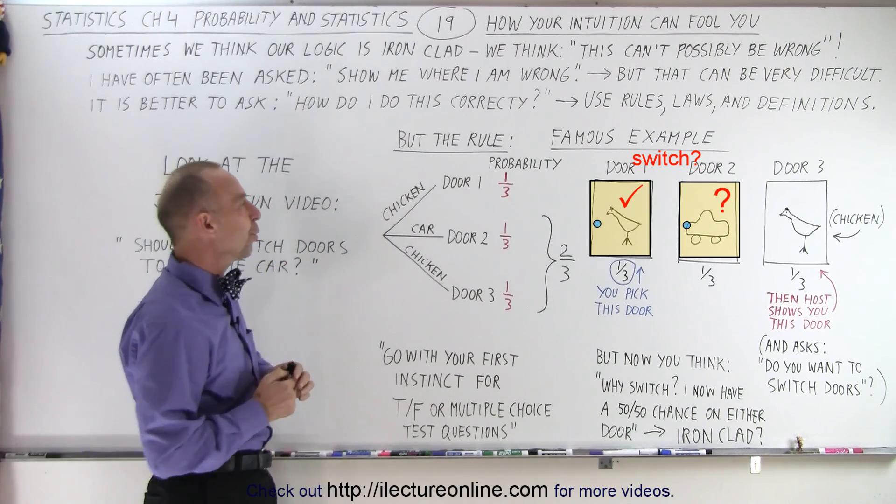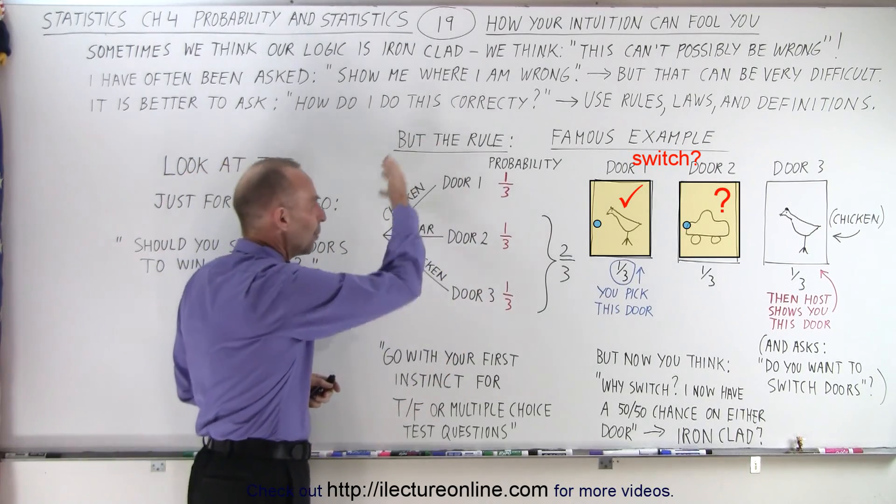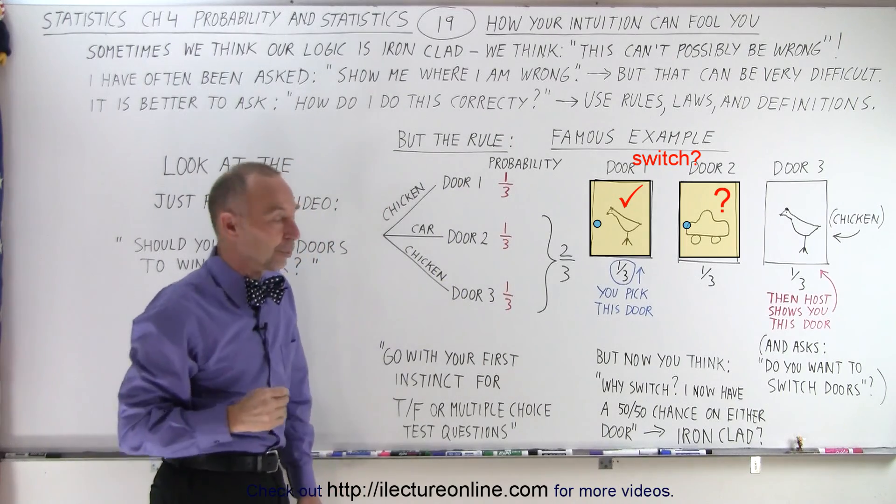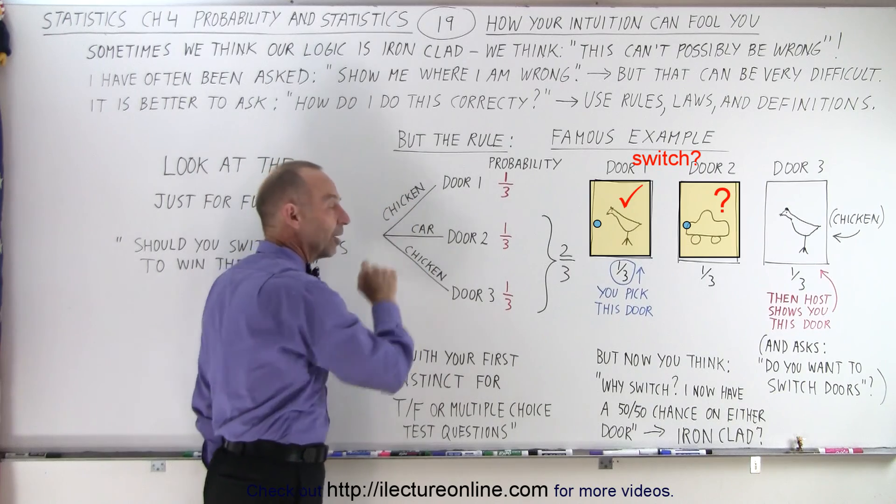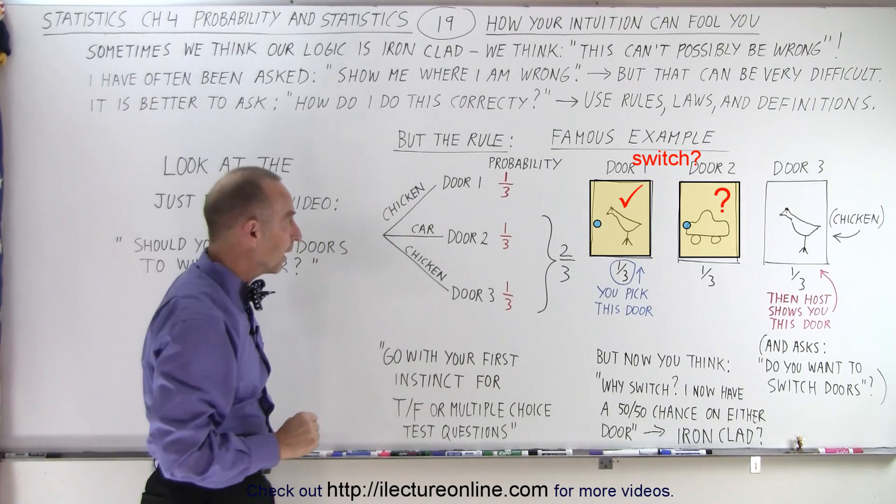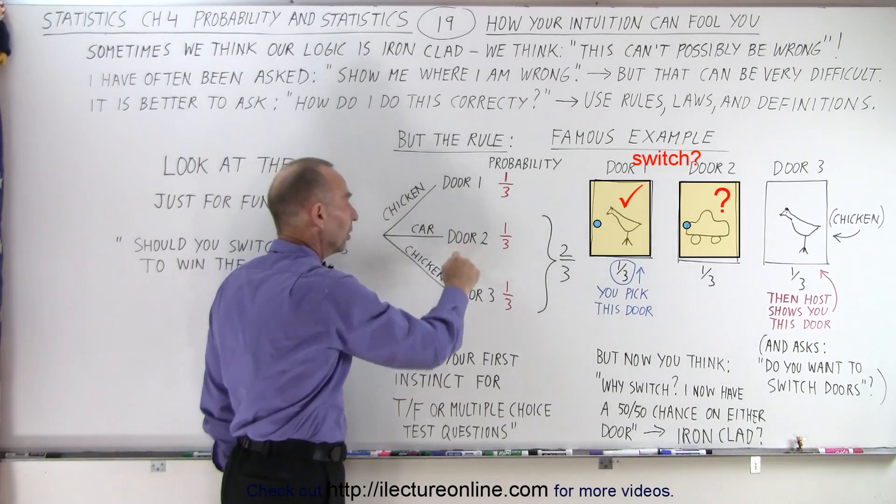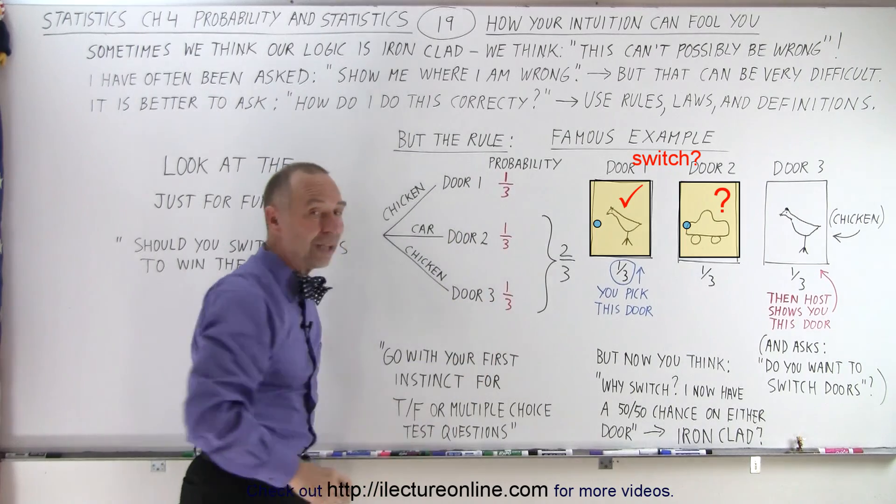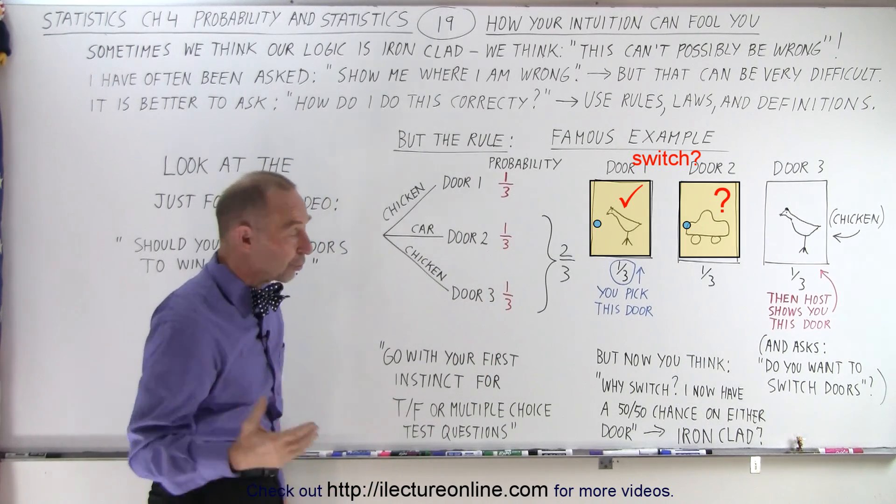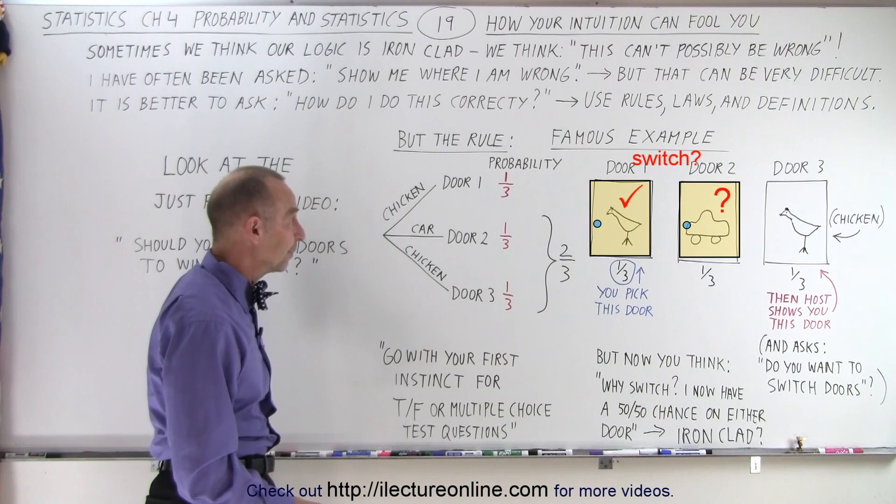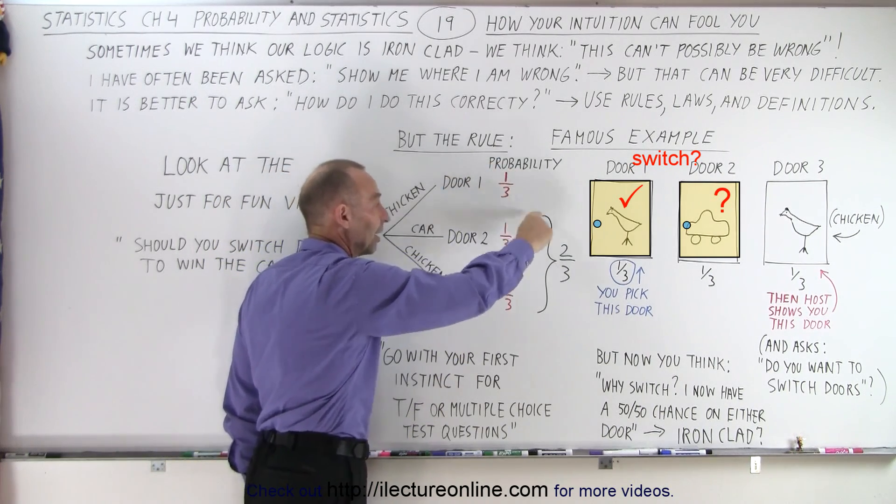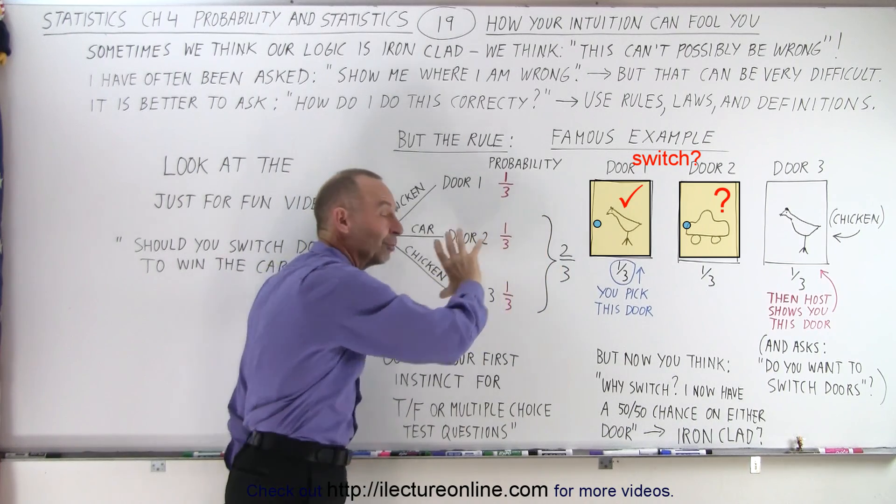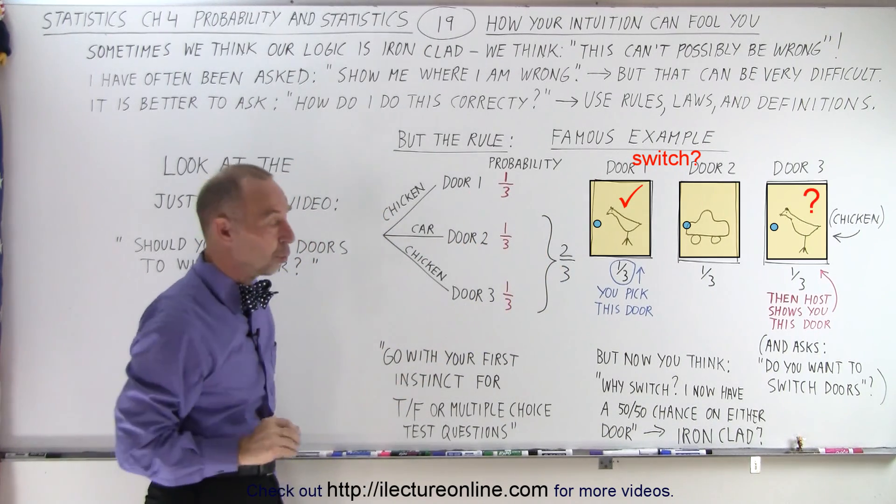Well let me show you why. So here we're going to use the rules of how it actually works. Again there's three doors. There's chickens behind two of the doors and a car behind the third door. Now let's say that each door, if you pick one of the three doors, you have one third chance that you pick the right door with the right prize that you want. But if you're going to pick this door that means you have one third chance you won the prize. That means there's two thirds chance the prize is behind one of the other two doors.